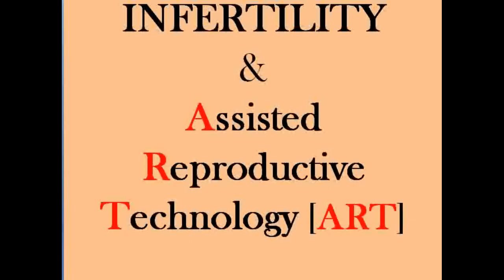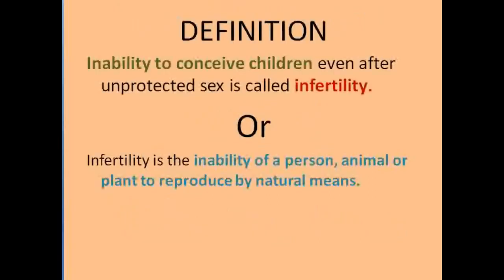First, let us see the definition of infertility. The definition of infertility is the inability to conceive children. That is, the family may not have the ability of conceiving or getting a baby, even if they are following unprotected sex. That we call infertility.